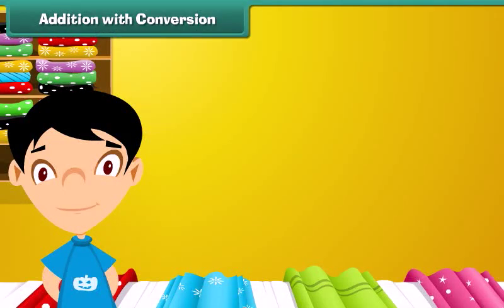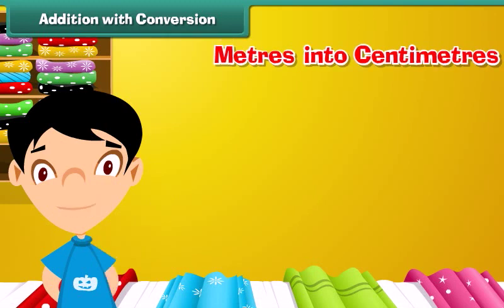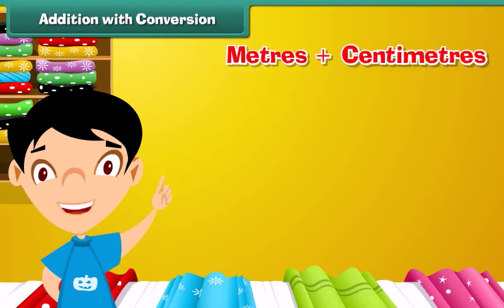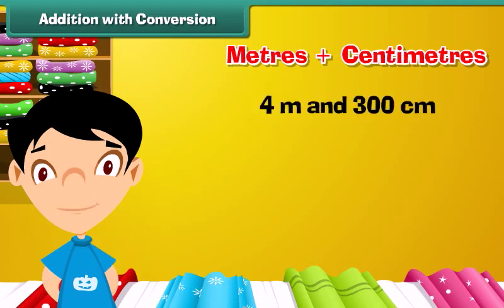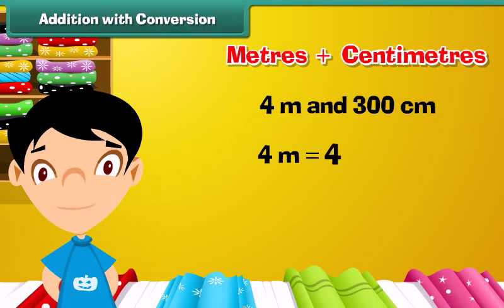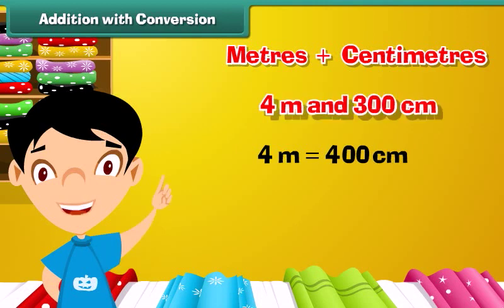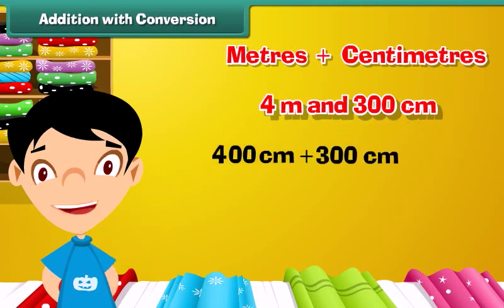Addition with conversion: Now that we know how to convert meters into centimeters, let us learn to add meters and centimeters. Let us add 4 meters and 300 centimeters. First, convert meters into centimeters: 4 meters is equal to 4 into 100, which equals 400 centimeters. So, 4 meters plus 300 centimeters equals 400 centimeters plus 300 centimeters, which equals 700 centimeters.